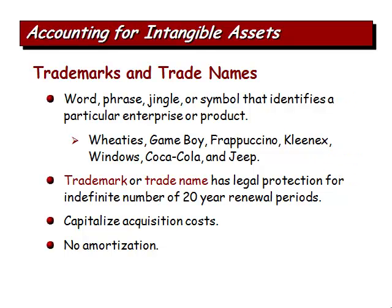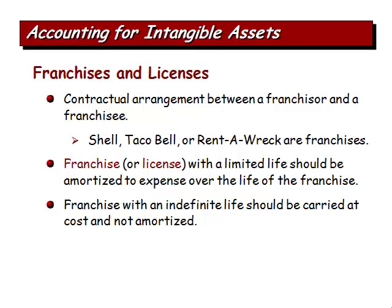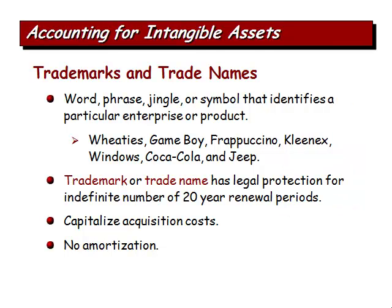Trademarks and trade names are words, phrases, jingles, or symbols — examples include Wheaties, Game Boy, Frappuccino, Kleenex, Windows, Coca-Cola, and Jeep. A trademark or trade name has legal protection for an indefinite number of 20-year renewal periods, giving it pretty much unlimited life. We capitalize the acquisition cost and do not amortize it — though if we have a product we can no longer sell, we'd have to write off the cost of acquiring that trademark.